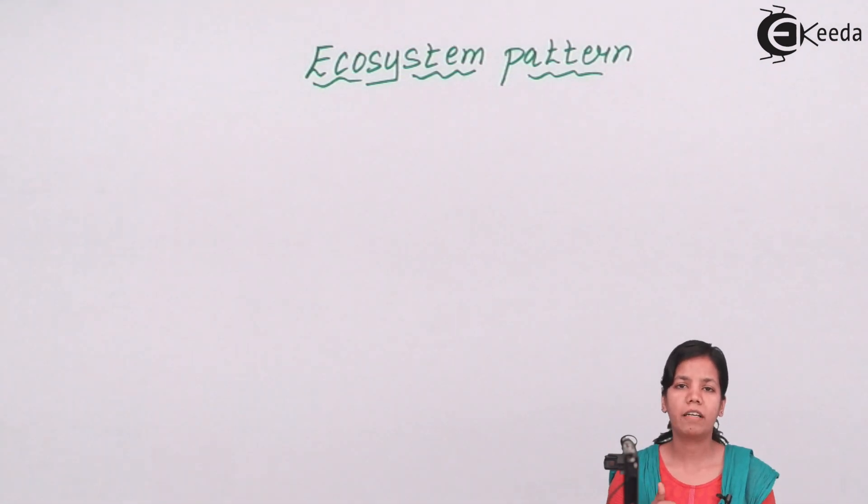The main primary factor of ecosystem is that every ecosystem pattern should support each other and should be able to survive from time to time.